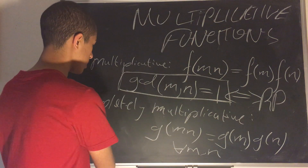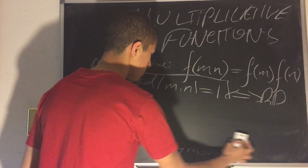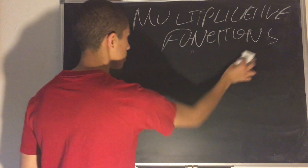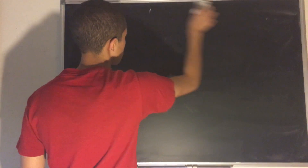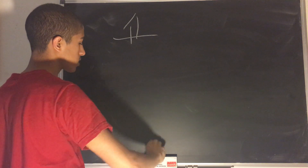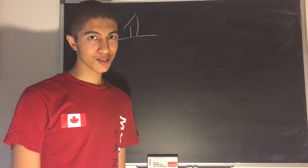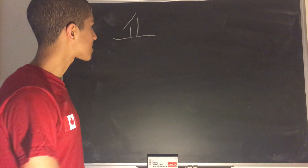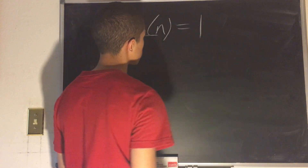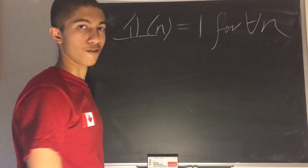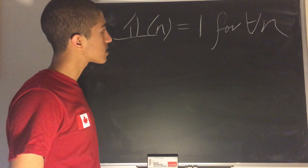That is the definition of multiplicative and completely multiplicative functions. Now let's discuss some examples. Let's discuss the function boldface 1, which I discussed previously in my previous videos as my favorite function — because it's so simple, it's wonderful. 1(n) is equal to 1 for all n. So let's ask ourselves, is this multiplicative?